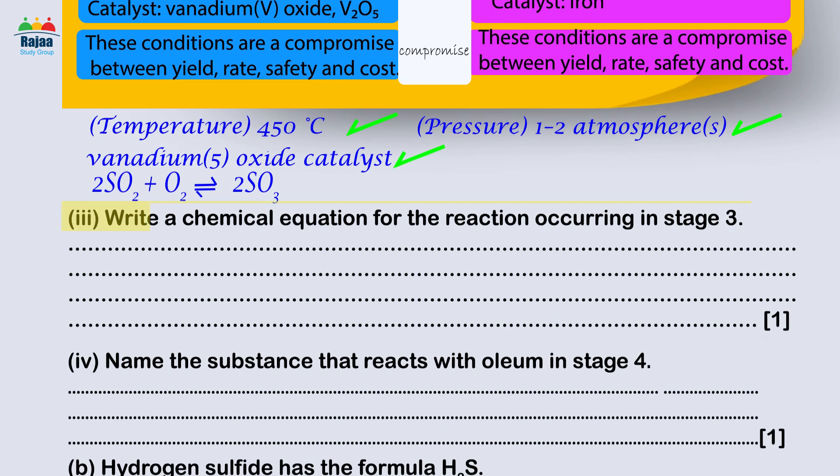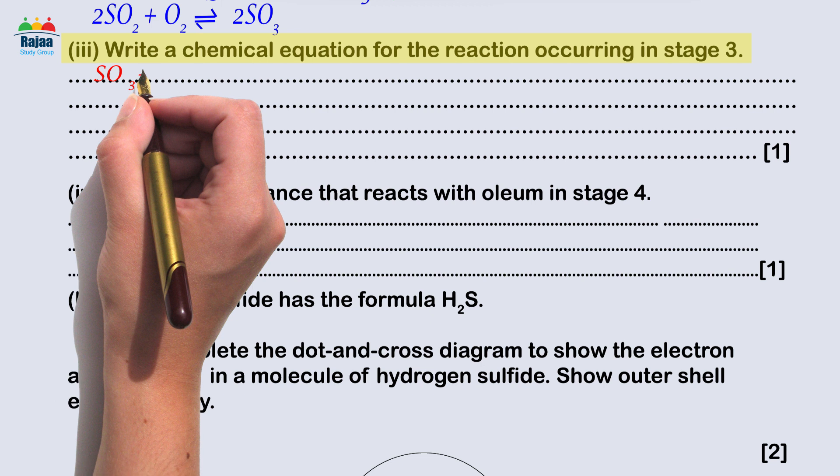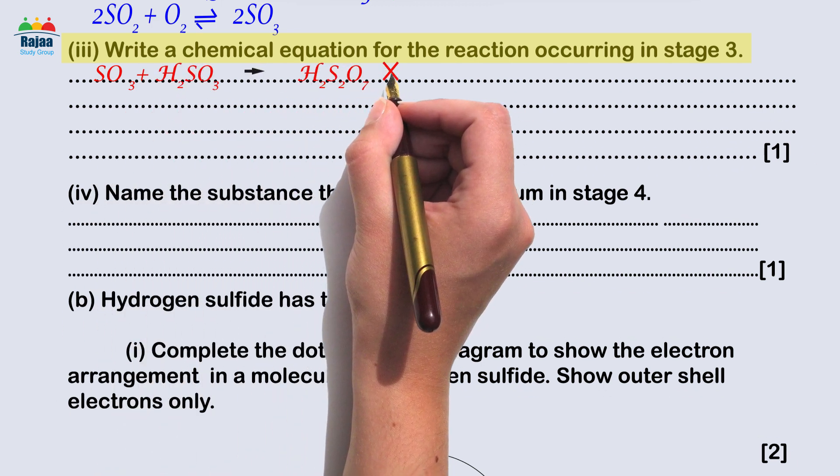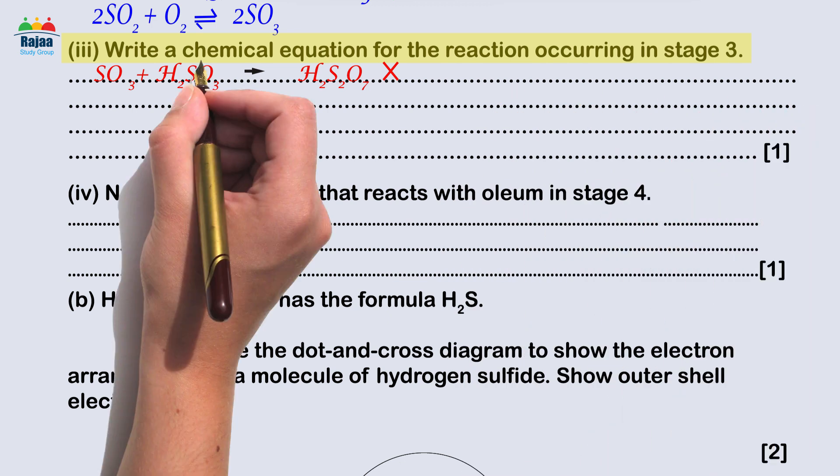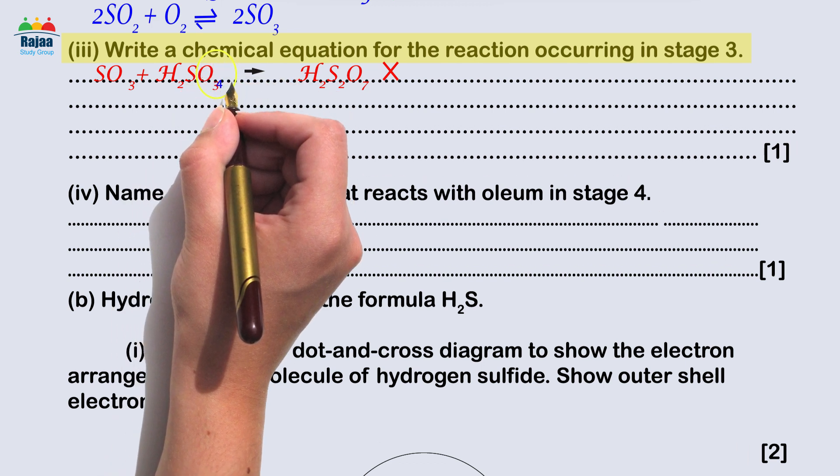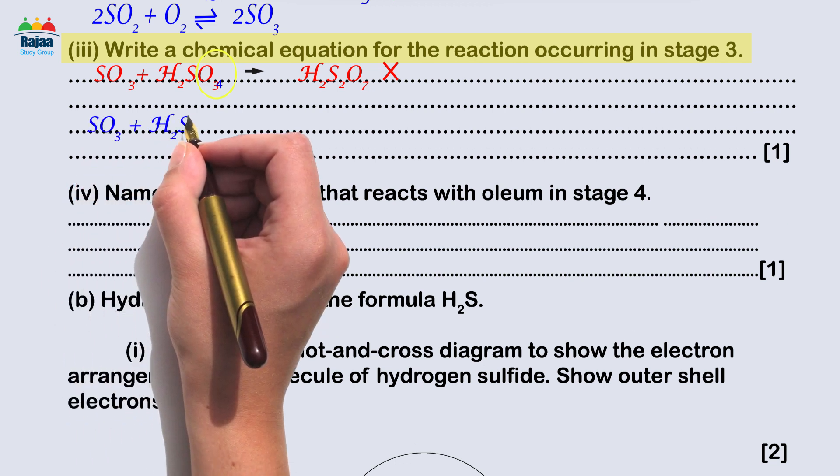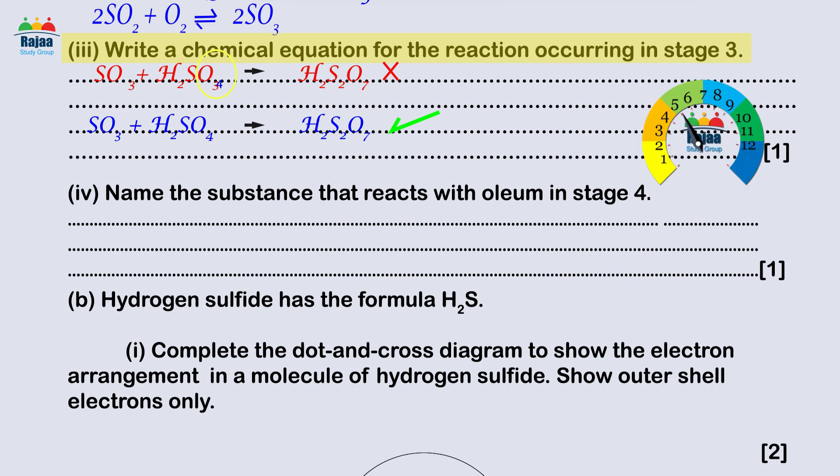Three: How would you formulate a chemical equation for the third stage reaction? This was very well answered. SO3 + H2SO3 → H2S2O7 - no, the most common error was in the sulfuric acid formula. Some students wrote sulfurous acid instead of sulfuric acid, H2SO3. The correct answer was SO3 + H2SO4 → H2S2O7. Score: one mark.